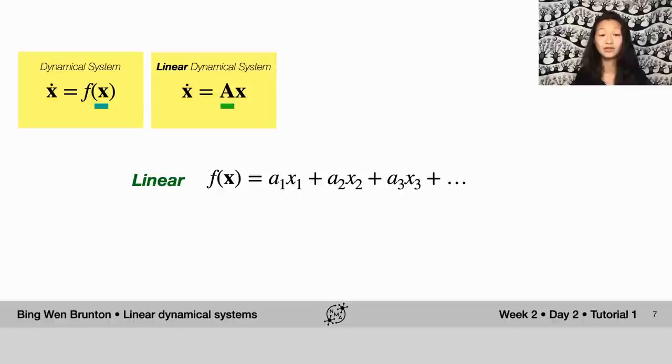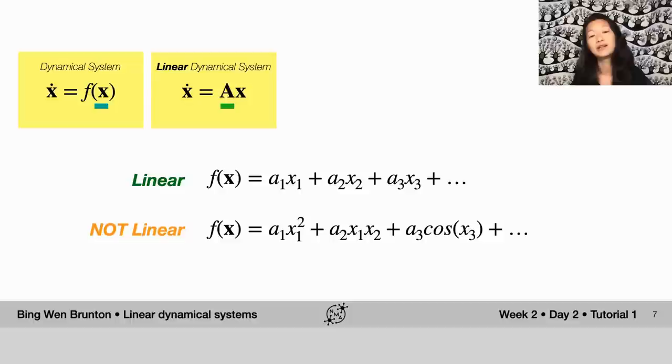That's it. What we're not allowed to have is anything having any other form. So it can't be x squared. It can't be two variables multiplied by each other. It can't be fancier functions like cosines and sines and tangent, none of that. All of those are non-linear functions.